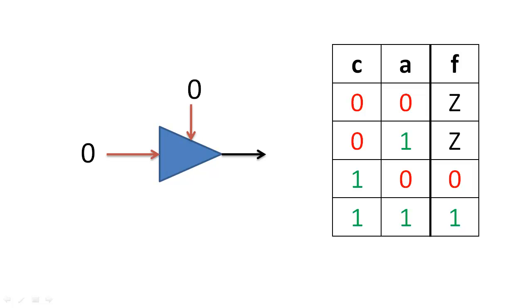So remember, the current is flowing through a circuit when the output is zero or one. But no current is flowing through a circuit when the tri-state buffer is a high impedance circuit.